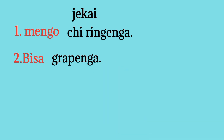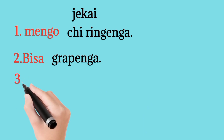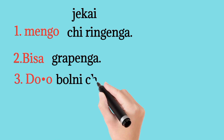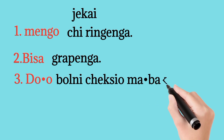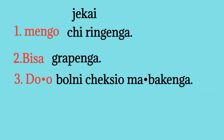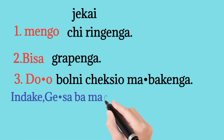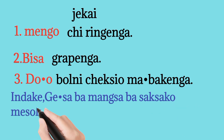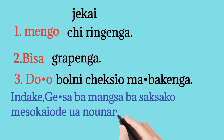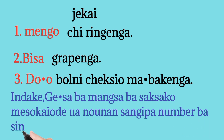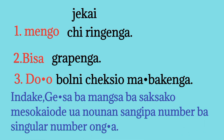Yang bisa grape nga, bisa saksako misoka. Yang bisa ni akan ada saksako misoka mo. Andaki ras hangepa nambar nga. Do o bol ni cek siyo. Ma baki nga, do o ra bol ni cek siyo, ma baki nga mo. Andaki do o yino ba do u ra mangsa ko misoka. Andaki giksa ba mangsa ba saksako. Mesa kayo di wan naunan sangepa nambar ba singgular.